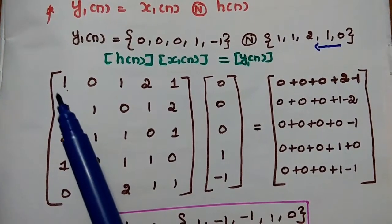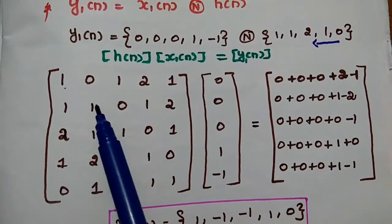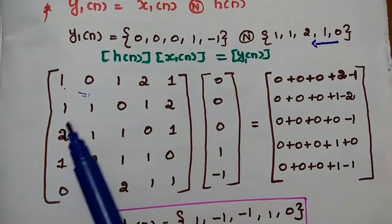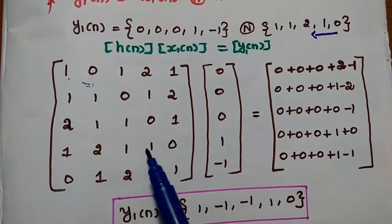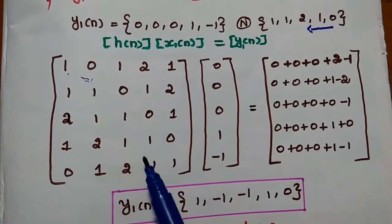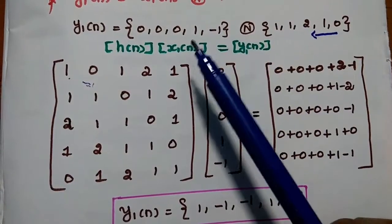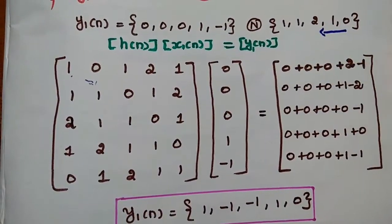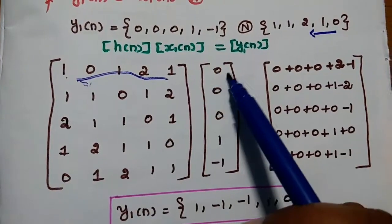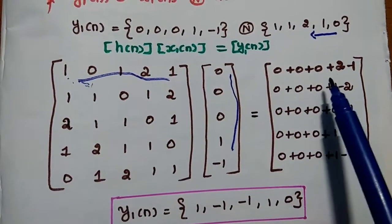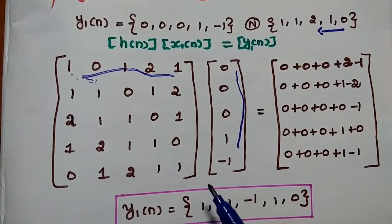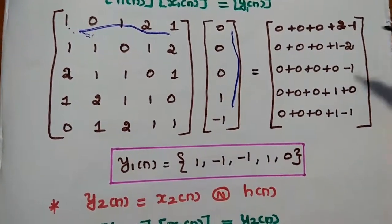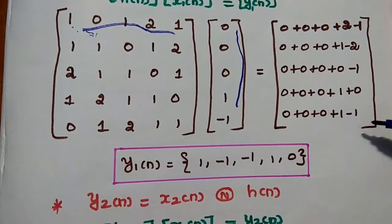The circulant matrix rows are: {1, 0, 1, 2, 1}, {1, 1, 0, 1, 2}, {2, 1, 1, 0, 1}, {1, 2, 1, 1, 0}, {0, 1, 2, 1, 1}. This is multiplied by x1(n) = {0, 0, 0, 1, -1}. Since the first three values of x1(n) are zero, the computation simplifies. Performing the matrix multiplication, we get y1(n) = {1, -1, -1, 1, 0}.